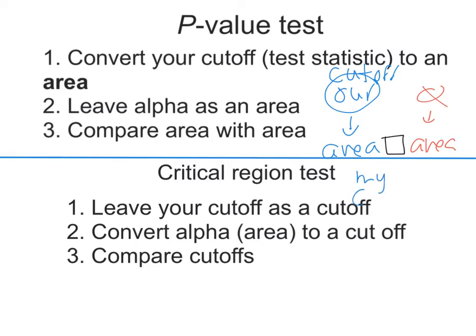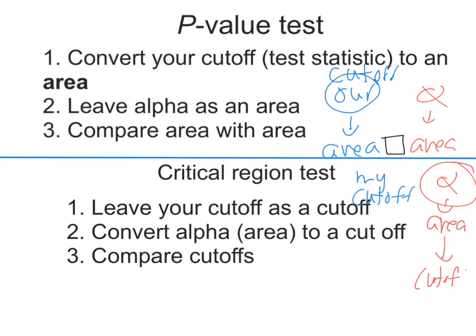What if we didn't want to change our cutoff? The critical region test does the reverse: it takes the alpha value, which is an area, and converts it to a cutoff. Then at the end of the test it makes sense to compare cutoffs with cutoffs. The general idea — whether it's the p-value or the critical region test — is we need to get our information into the same units.